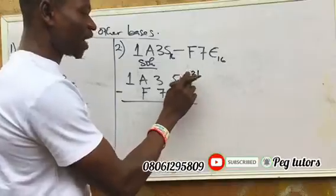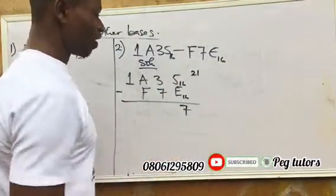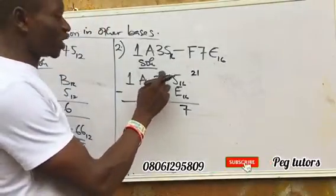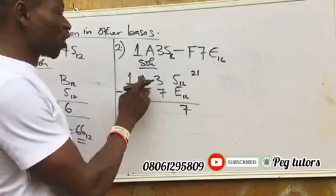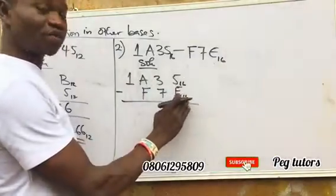So 21 minus 14 now would give you 7. So we have 7 here. Then go to the next. If you come here now, since you have borrowed 1, 2 is now remaining here. So you borrowed 1 from this 10, and that 1 you borrowed again assumes the value of 16.